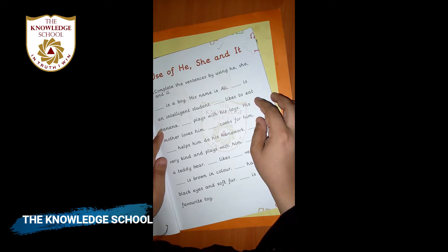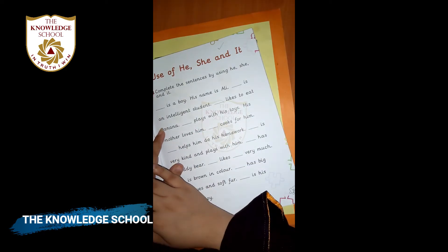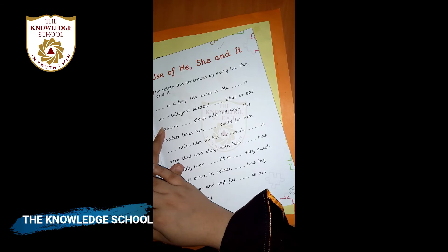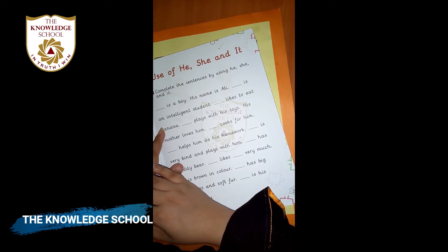He is used for a boy or man. She is used for a girl or woman. And it is used for an animal or things. When we talk about an animal or something, then we use 'it'.